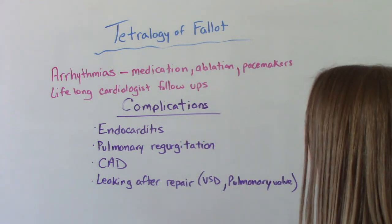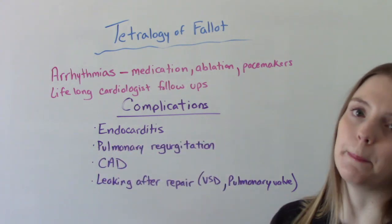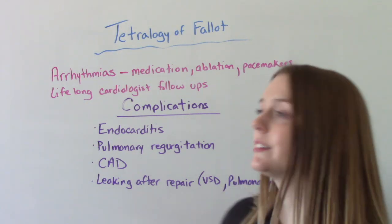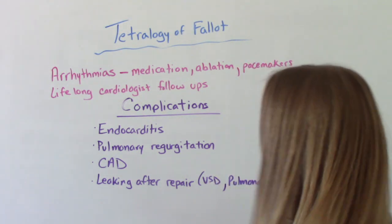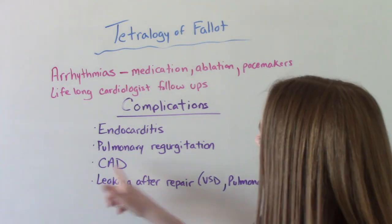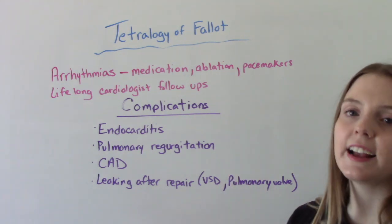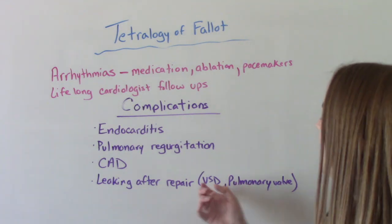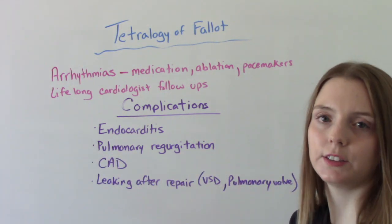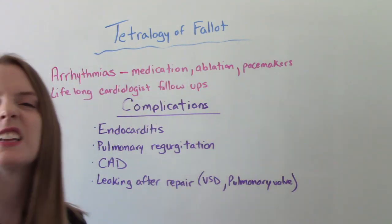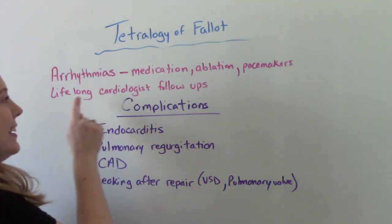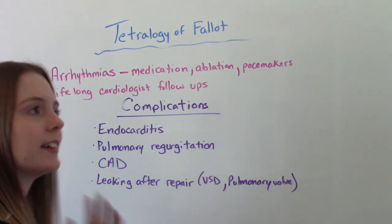A couple of complications to point out: endocarditis is a big scary one — a bacterial infection that can occur after surgery, so we'll give antibiotics and monitor for signs of infection. Pulmonary regurgitation, where blood backs up and backflows. Coronary artery disease. And leaking of the vessels that have been repaired — the ventricular septal defect patch or pulmonary valve might start to leak a little. These are things we want to keep an eye out for, which is why they need that lifelong follow-up to make sure everything is still working well.